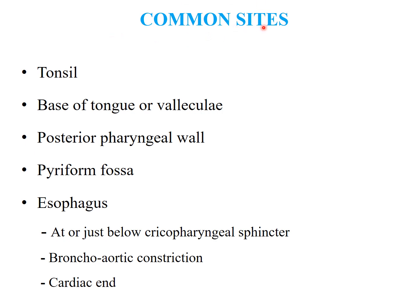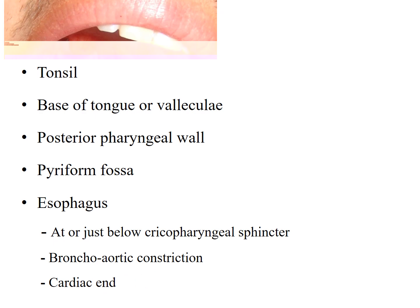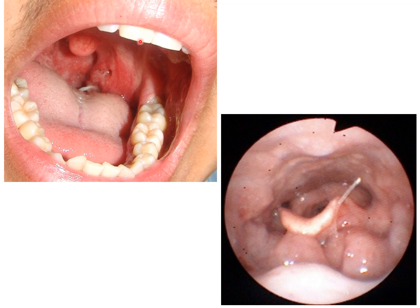The common sites starting from the mouth are the tonsils, the base of tongue or the vallecule, the posterior pharyngeal wall, pyriform fossa, and the esophagus — specifically at its anatomical constrictions: the cricopharyngeal, bronchial, and cardiac constrictions. In this picture, the fish bone is stuck in the tonsil, which is the primary site where a foreign body can lodge.